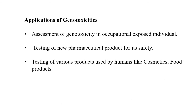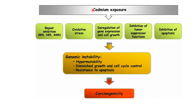Genotoxicity assessment is useful in evaluating occupational exposure of individuals — for example, petroleum filling station workers and paint workers. It is also used for testing new pharmaceutical products for safety, and for testing various products used by humans such as cosmetics and food. A typical example is cadmium, which inhibits the DNA repair mechanism, enhances oxidative stress, leading to hypermutability and ultimately carcinogenicity.